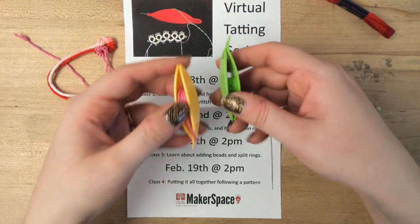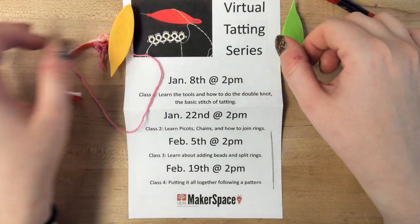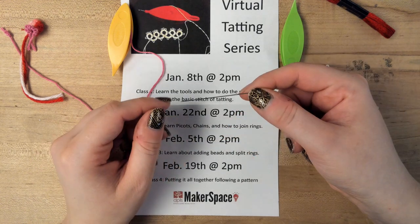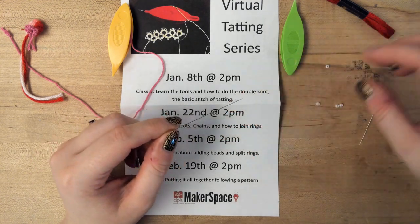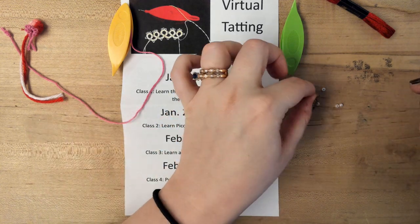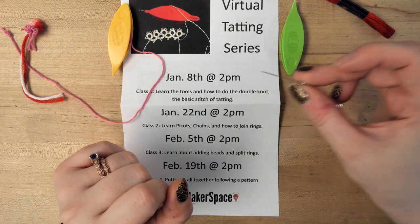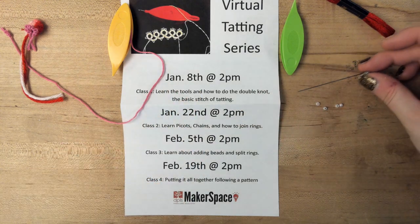You'll have two tatting shuttles. One will be filled and one will be empty. I'll show you how to fill them. There will be a beading needle and some beads. We won't need those until the third class, and our second class will be using this pin for our picots. So you don't need that one yet.